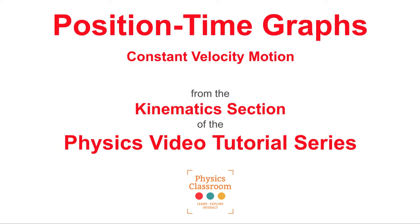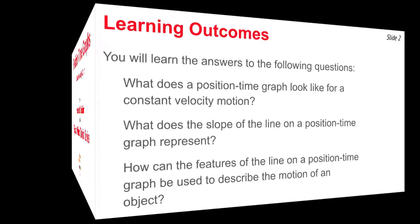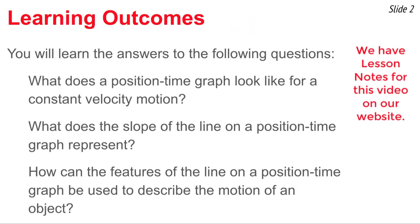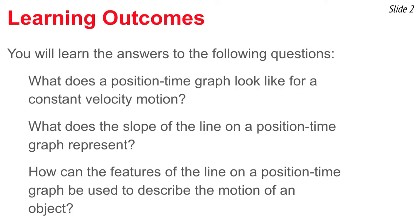Welcome to the Physics Classroom's video tutorial series on kinematics. The topic of this video is position-time graphs, with a focus on constant velocity motion. We wish to answer three questions today: first, what does a position-time graph look like for constant velocity motion? Second, what does the slope of a line represent? And third, how can the features of these graphs be used to describe the motion of an object? Let's get started.